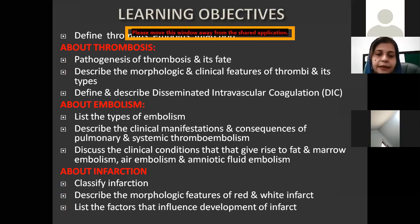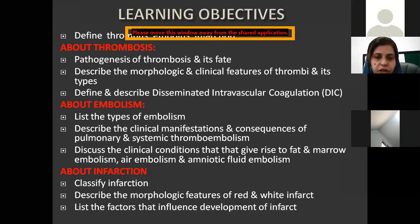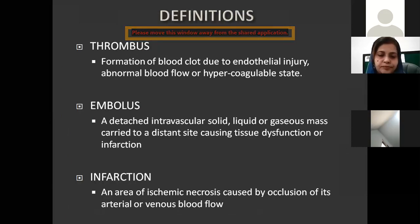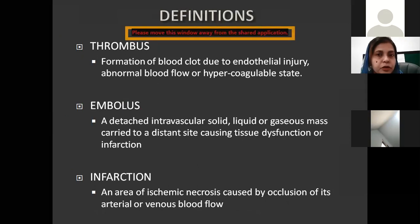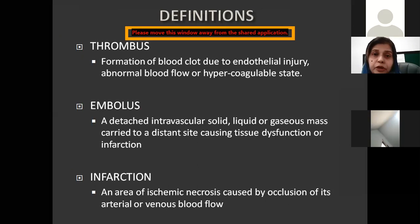What are the mechanisms behind them and what are the common examples along with their morphology? First, coming to the definition: thrombus, in layman's terminology, is a blood clot. There are three major mechanisms responsible for thrombosis in our body, and these are endothelial injury, abnormal blood flow, or a hypercoagulable state.